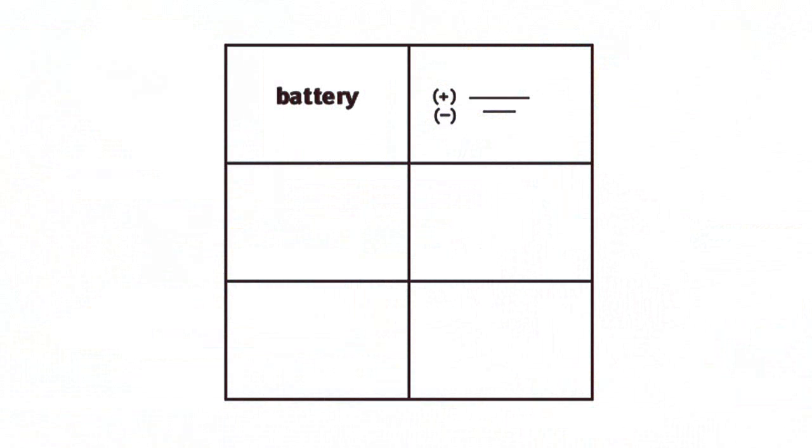Explain that there are many benefits to using symbols. One benefit is that the symbols are standardized so that everyone understands which component is being represented. Another benefit is that no one has to be particularly artistic to draw the symbols. Draw and identify the symbols of a battery, including positive and negative terminals, a wire, and a bulb.